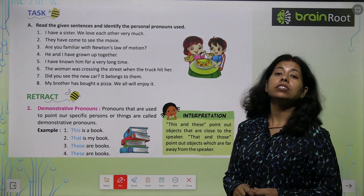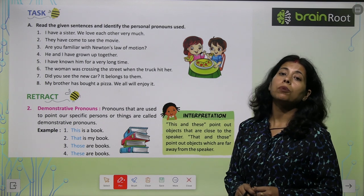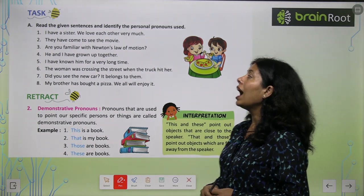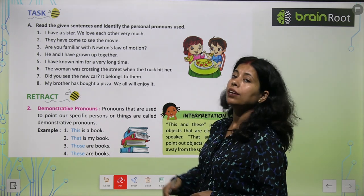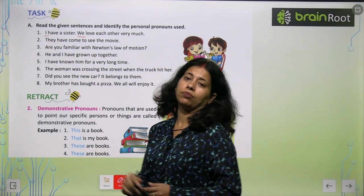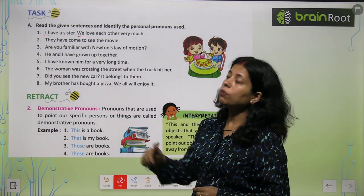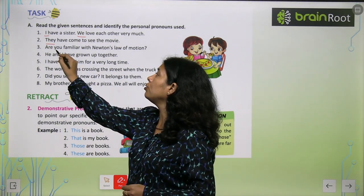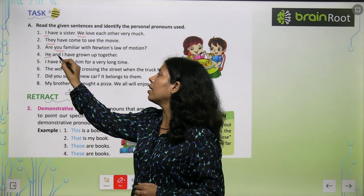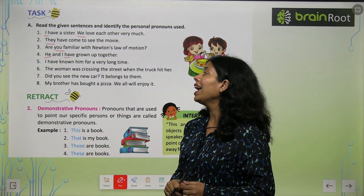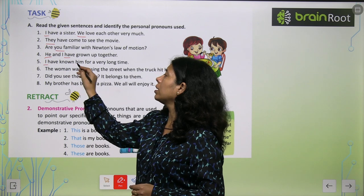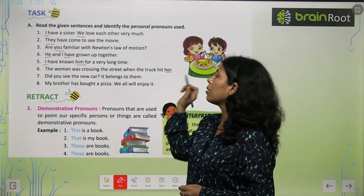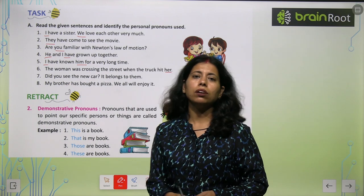Now come straight to the task. Read the given sentences and identify the personal pronoun used. I have a sister — we love each other very much. Pronouns here: I and we. They have come to see the movie — pronoun: they. Are you familiar with Newton's law of motion — pronoun: you. He and I have known him for a very long time — pronouns: he, I, him. The woman was crossing the street when the truck hit her — pronoun: her.